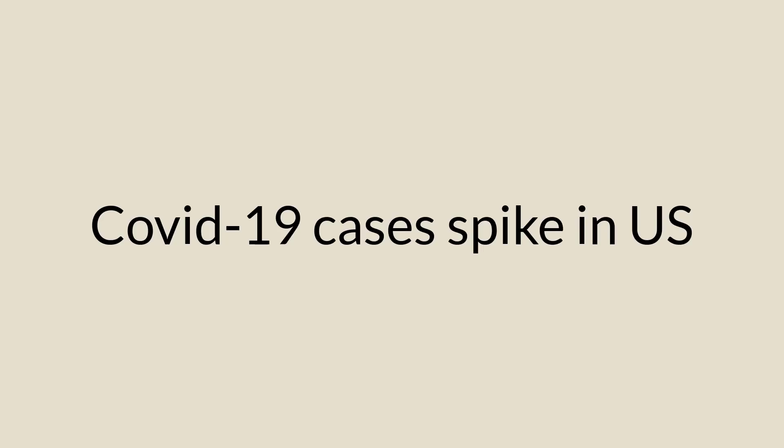So the first one is from CNN.com. I'll just read you the whole thing. It's actually very short, and this is talking about coronavirus: COVID-19 cases spike in the US. This is a really very short and simple headline, but the key word here that might be new for some people is 'to spike.'